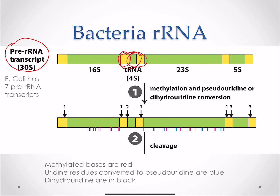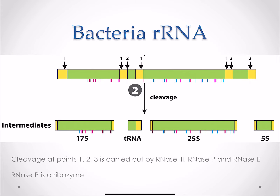You're going to get methylation, pseudouridine, and dihydrouridine conversion. All of these tags are going to be changes in our ribosomal RNA. You can see there are a lot of methylated bases, pseudouridine in those blue positions, and dihydrouridine in those black positions. You're eventually going to get cleavage — your intervening sequences are going to be cleaved out, and you're going to get transfer RNA and different size intermediates of your ribosomal RNA.